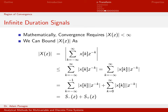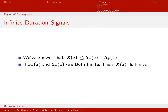For the magnitude of X of Z to be less than infinity, I need both S minus and S plus to be finite. Let's figure out conditions on these to ensure that S minus and S plus are indeed finite.